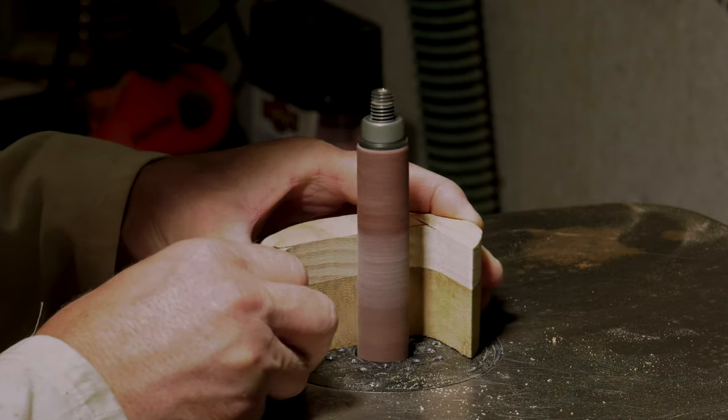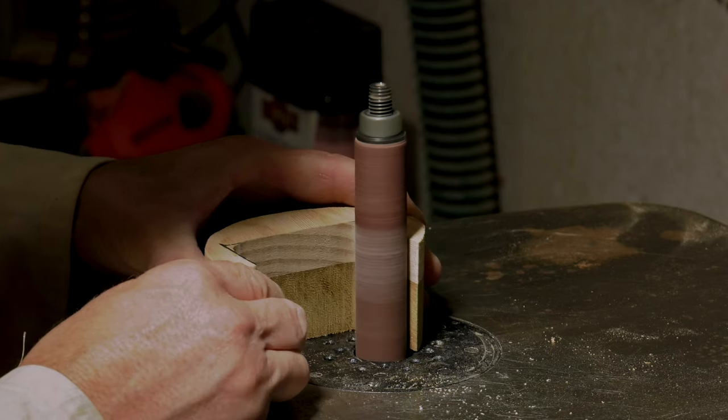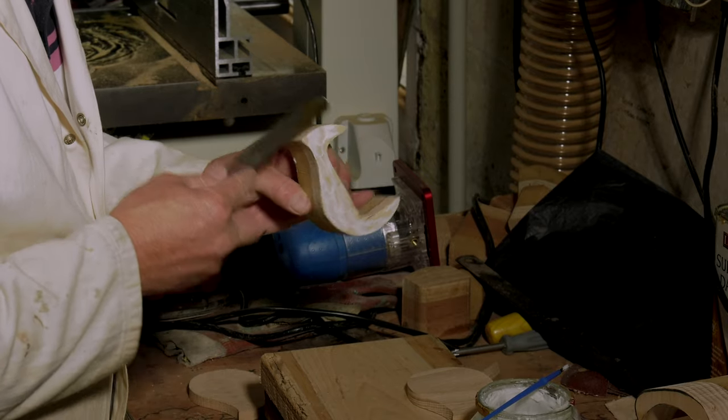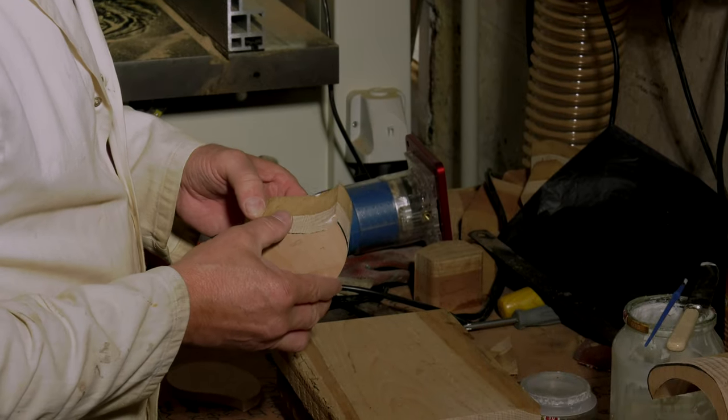Again the bobbin sander is used to smooth the inside of the drawers before the back and front are lightly sanded and glued and clamped back into place.